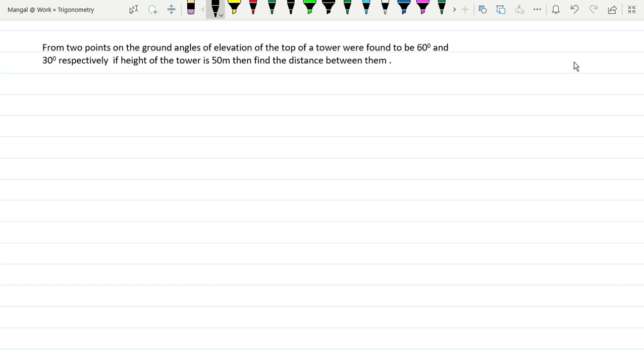What do we mean? From the ground, a point on the tower will be the top of the tower. The elevation angle will be to the top of the tower. The elevation angles are 60 degrees and 30 degrees. The height of the tower is 50 meters.